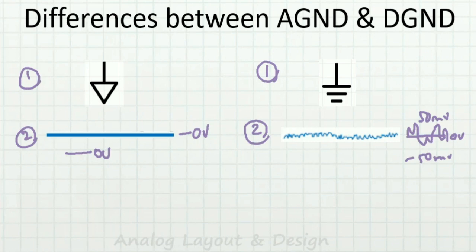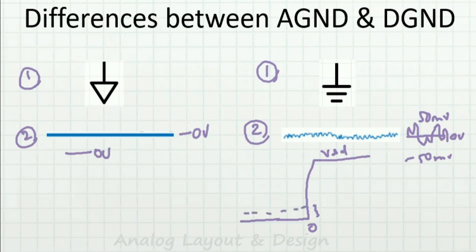Digital ground is quite noisy. For a digital gate, the low level will not always be exactly zero — there is a noise margin. Similarly, high will not always be exactly VDD. There is a margin of around 100 millivolts at each end. Even if the voltage is 100 millivolts above zero it is still considered logic low, and 100 millivolts below VDD is still considered logic high.